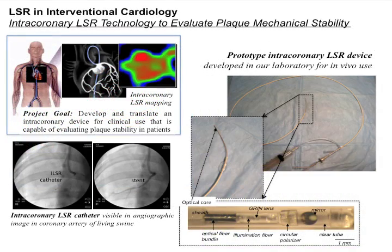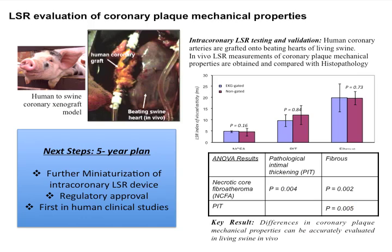Towards this end, we are developing miniature intravascular catheters, as you see on the right corner of the screen. These catheters are used in vivo and are guided into the coronary artery of patients, which will allow the intracoronary mapping of mechanical properties of plaques. This prototype catheter is shown here in the swine coronary artery.